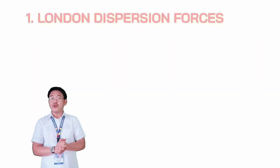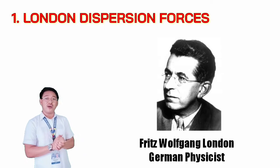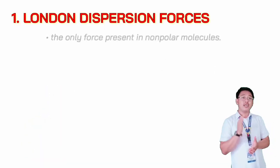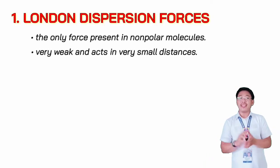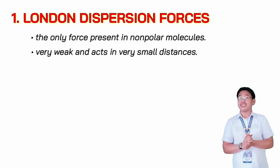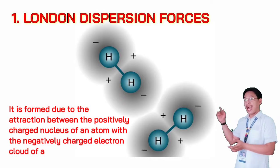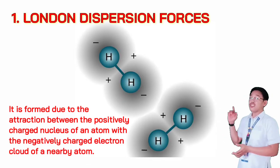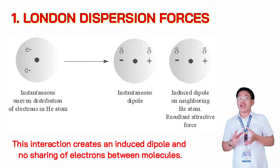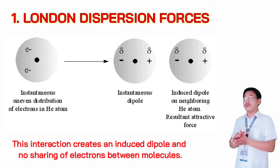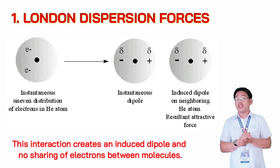Let's start with the London dispersion forces, named after their discoverer Fritz London. London dispersion force is the only force present in non-polar molecules. It is very weak and acts over very small distances. It is formed due to the attraction between the positively charged nucleus of an atom with the negatively charged electron cloud of a nearby atom. This interaction creates an induced dipole, and there is no bonding or sharing of electrons between the two molecules.